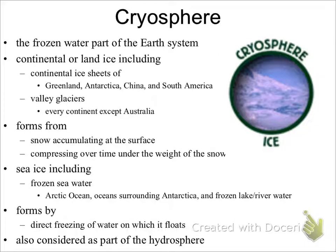The cryosphere, or the frozen water part of the Earth's system, includes continental or land ice, such as the continental ice sheets of Greenland, Antarctica, China, and South America, and valley glaciers that cover every continent except Australia. It is formed from the accumulation of snow at the surface that compresses over time under the weight of the snow.